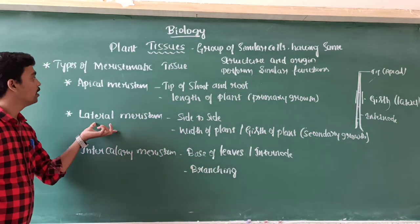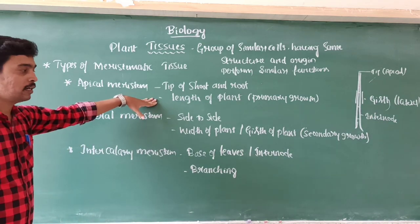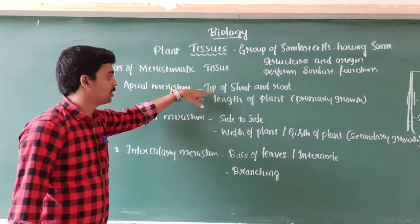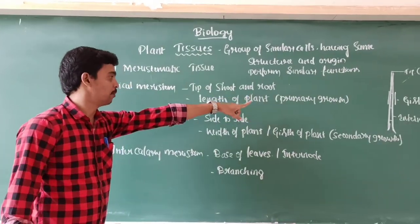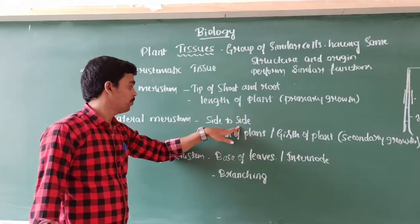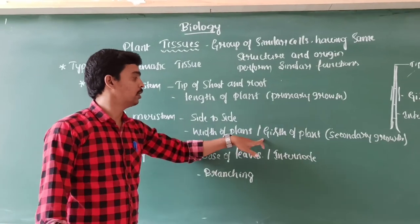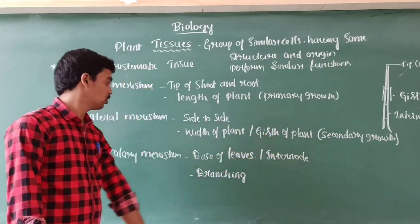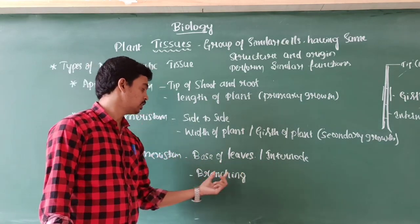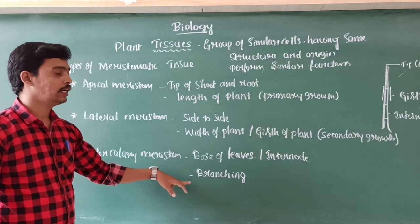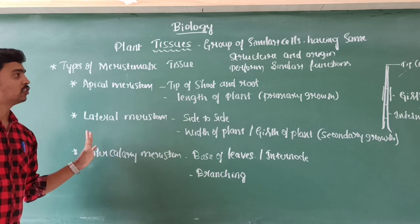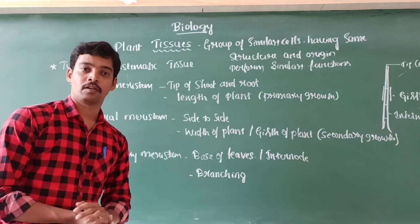To summarize the types of meristematic tissue: apical meristem is present at the tip of the shoot and root, and causes primary growth — the length of the plant body. Lateral meristem is present on either side and causes an increase in width — the secondary growth. Intercalary meristem is present at the base of leaves or internodal region and causes branching — new twigs are formed by the intercalary meristem. Thank you.